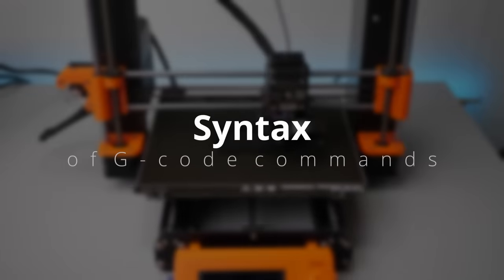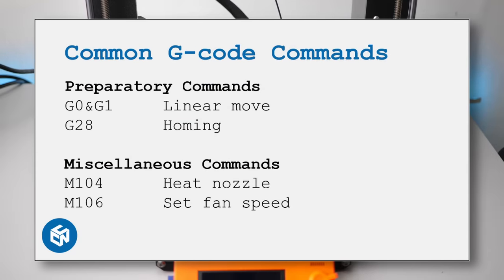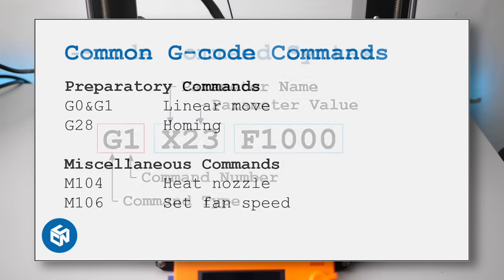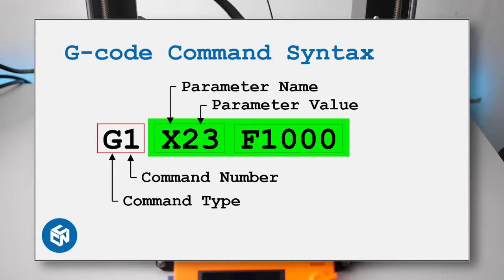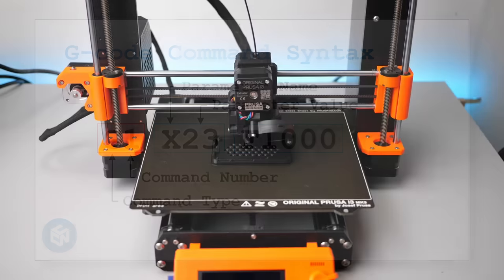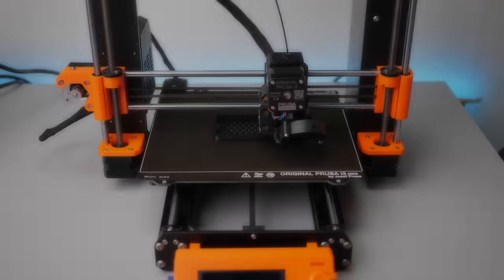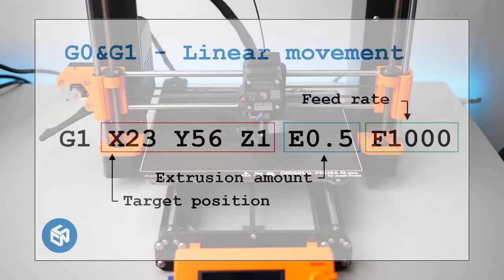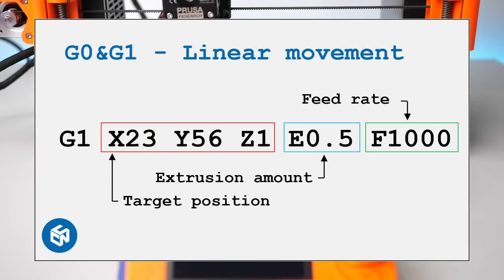Let's now take a look at the syntax of G-code commands. Each command starts with a letter. G stands for preparatory commands and is usually used for movement-related tasks. M commands, or miscellaneous commands, are often used to change settings or perform actions. The following number references a specific command. Next follow the parameters for that G-code command with a descriptive letter followed by the value. Let's start with the most common commands, G0 and G1, used for the movement of the axes. The X, Y, Z parameters define the location where it needs to move. E defines the amount of material extruded and F defines the feed rate, usually in millimeters per minute.